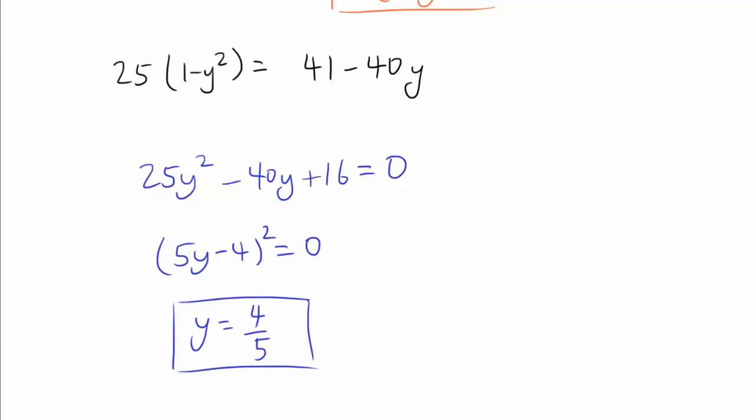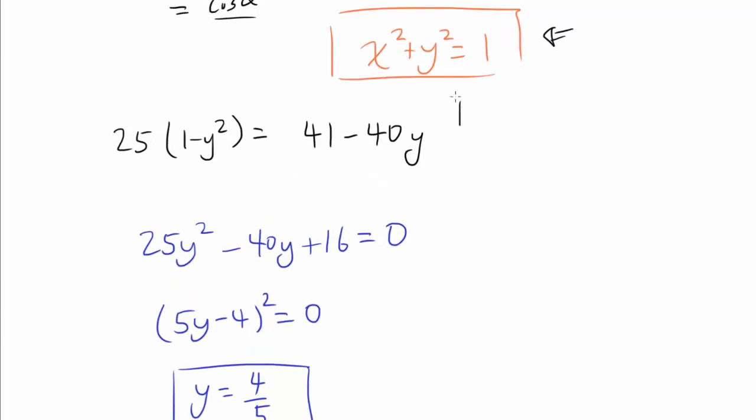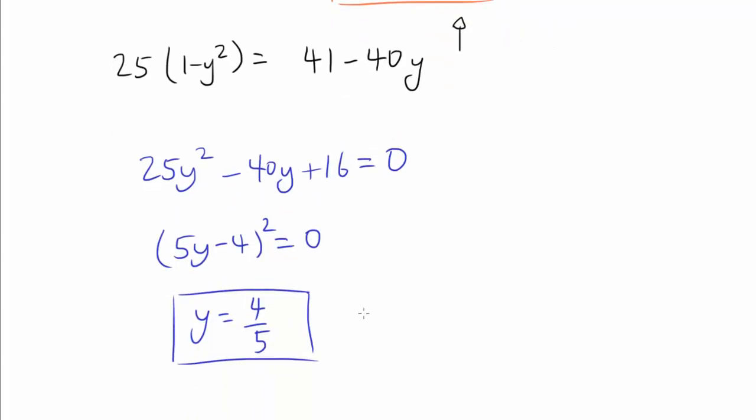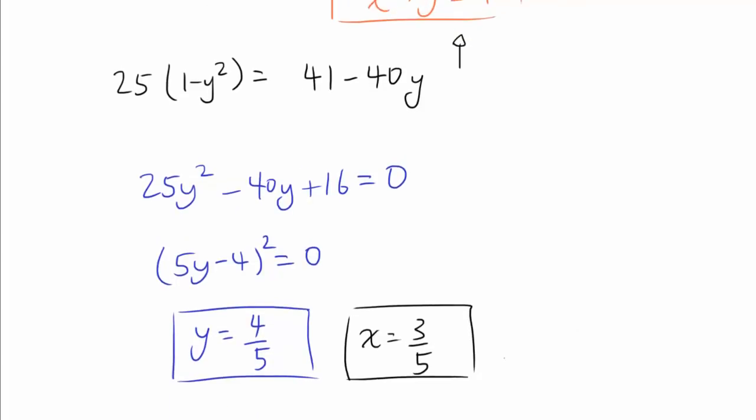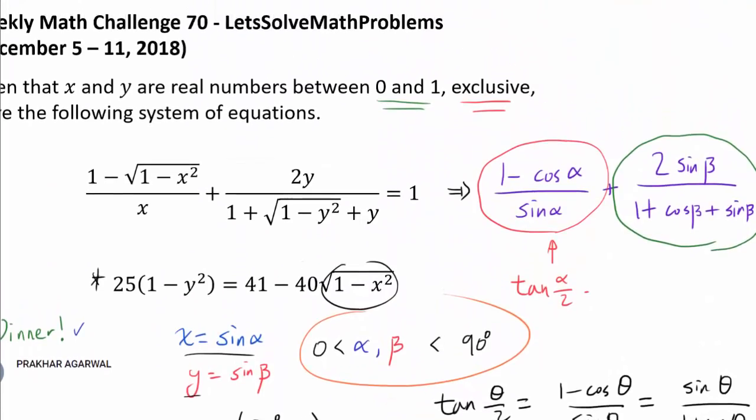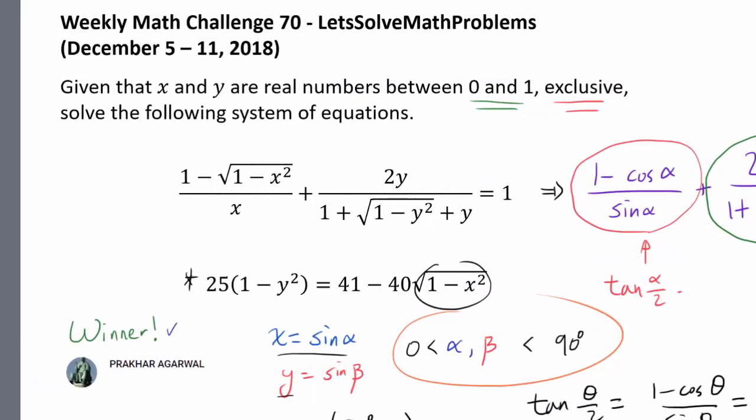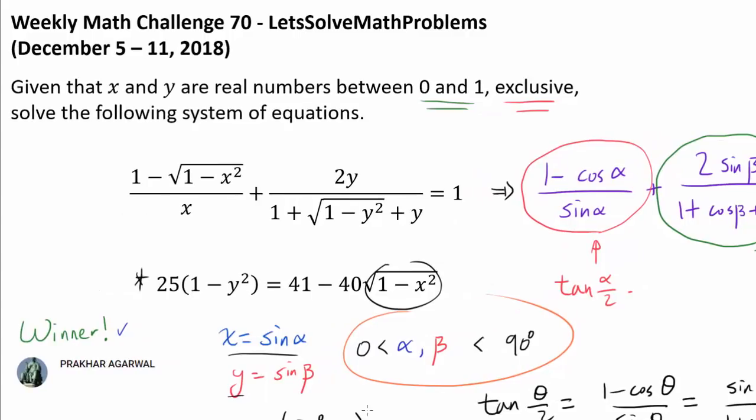And because y is 4 fifth, and x squared plus y squared is 1, we know x is 3 fifth. And we are done. So let's go back up. So we have shown, using trig substitutions and trig identities, that the solution to this system of equations is x equals to 3 fifth and y equals to 4 fifth.